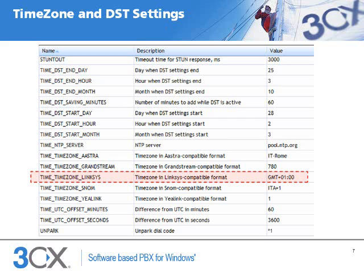Next, the phone will need to know which time zone it is in. We can set this in the Time Time Zone Linksys variable. The default value is GMT plus 1, but we can customize this for the New York time zone by changing the value to GMT minus 5.